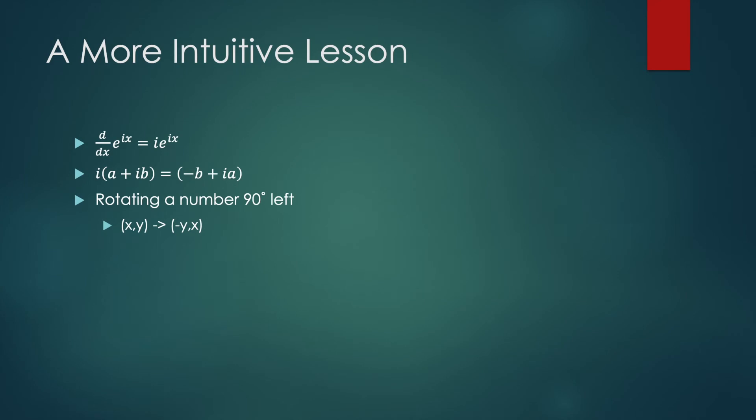The way I like to start to give a lesson on the intuition behind e to the IX is by thinking of the derivative of e to the IX. Through the chain rule, we know we take the derivative of IX, the inner function, and multiply it by the derivative of the outer function.